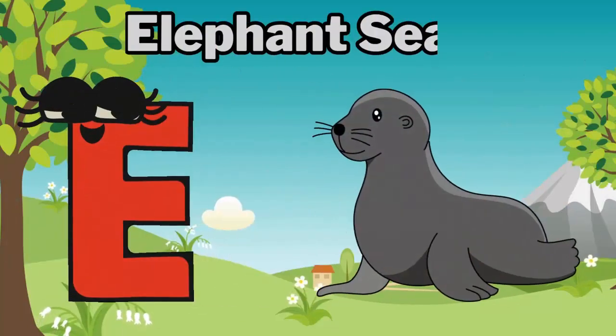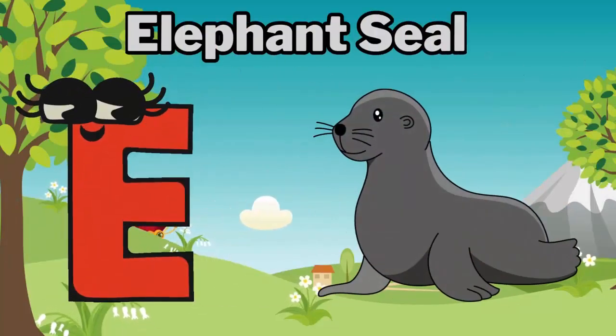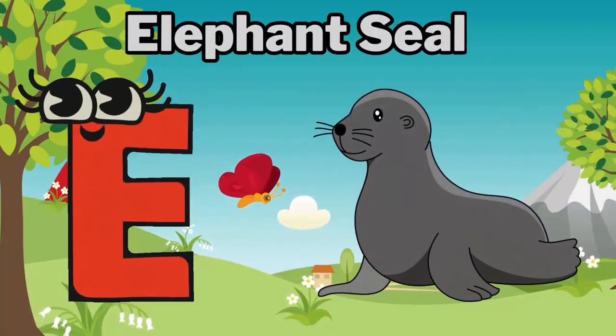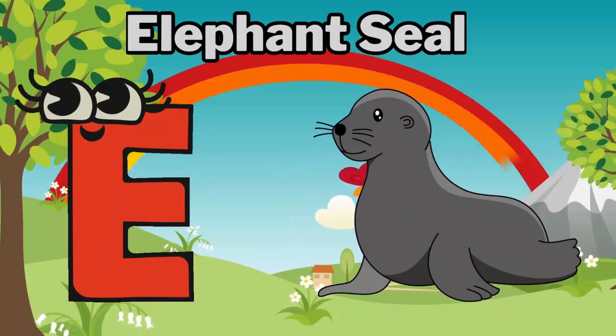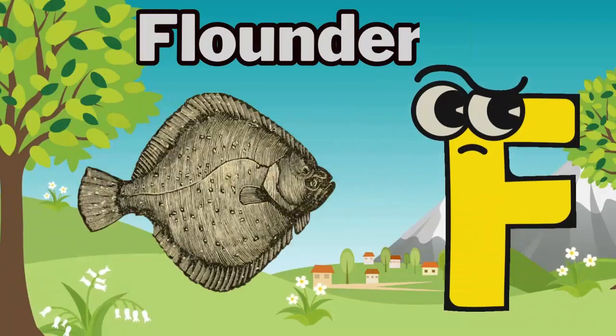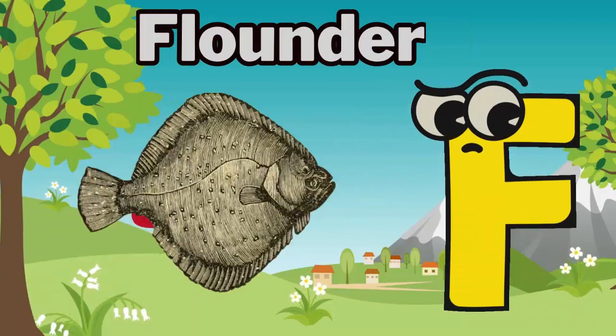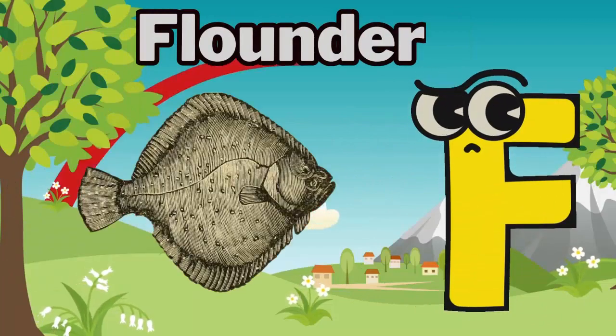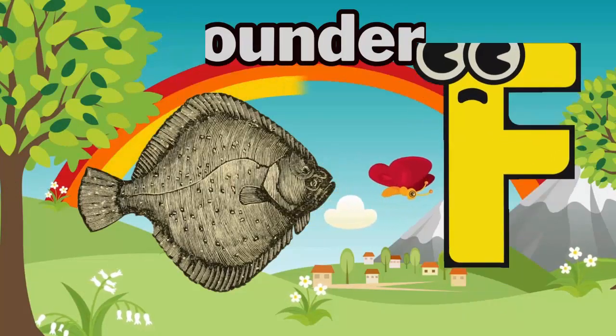E is for elephant seal. Ah, ah, elephant seal. F is for flounder. Fuh, fuh, flounder.